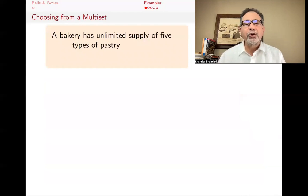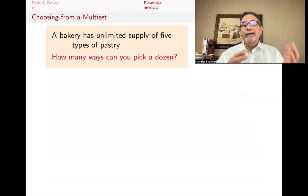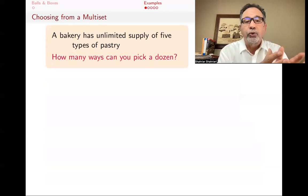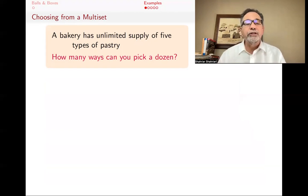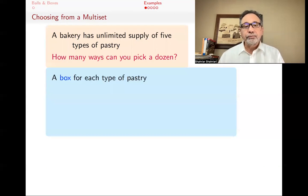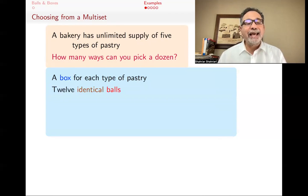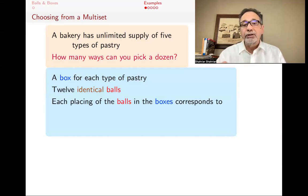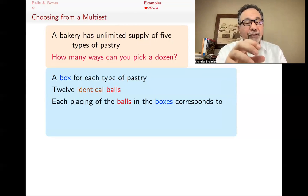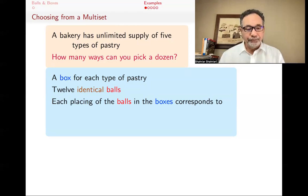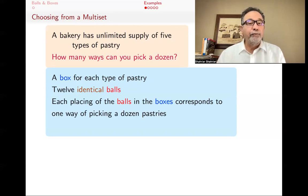Let's say a bakery has an unlimited supply of five types of pastries, and you want to know how many ways you can pick a dozen. We're going to assign one box for each type of pastry and have 12 identical balls. The balls tell us which pastry we are going to pick — every time you put a ball in a box, that means you're picking that pastry — and because you have 12 balls, that tells you how you pick your dozen pastries.